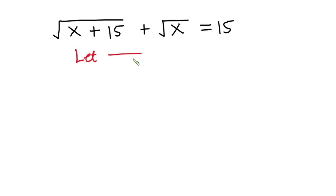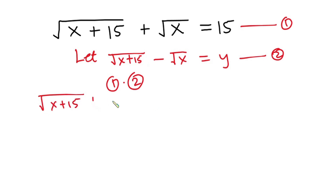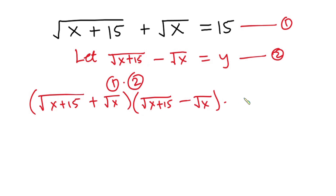From the first approach, I will let square root of (x + 15) minus square root of x equal y — I'll call this equation 2. Then I'll multiply equation 1, which is square root of (x + 15) plus square root of x equals 15, by equation 2: square root of (x + 15) minus square root of x. This gives us 15 times y on the right-hand side.